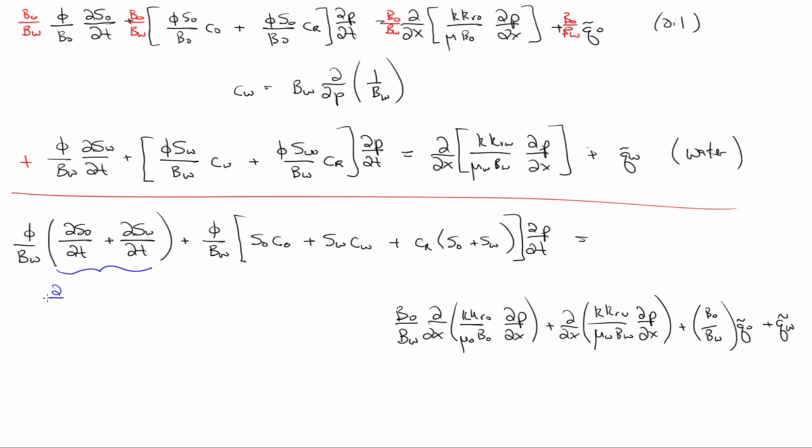Now let's look at this term. Would everybody be okay if I wrote this as partial/partial t of S0 plus SW? Is that okay? What is S0 plus SW? What's it equal? Equals 1. What's the time rate of change of 1? Zero. Also, here we have another 1. So we're actually going to define this as phi over BW times the total compressibility, where the total compressibility is S0 times C0 plus SW times CW plus CR. And we've also used that.